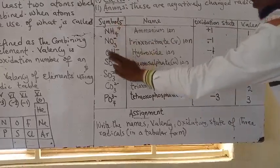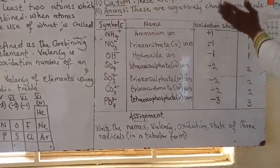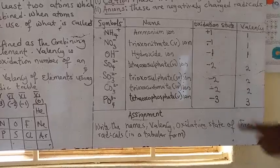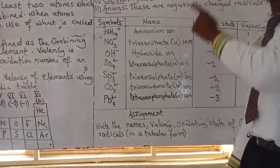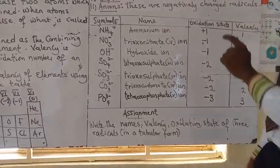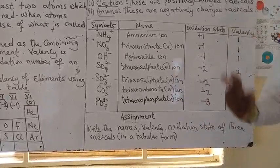Likewise, other radicals. You can see other radicals and these are their names, oxidation states and valency. You have to understand the valency and the radicals of atoms. Because why? If you don't have an understanding of this, it will be difficult for you to understand how to write the formula of compound.